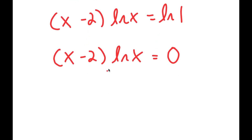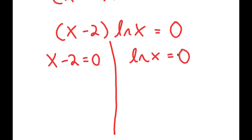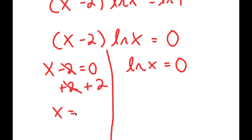From here I get two equations: x minus 2 equals 0, and ln x equals 0. For the first equation, I add 2 to both sides — these cancel out — and I'm left with x equals 2.